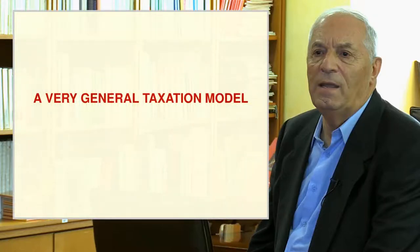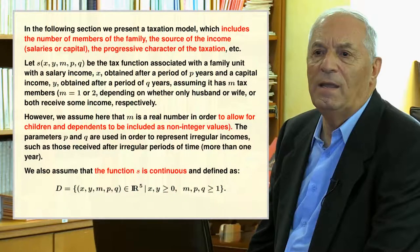Next we present a much more complex tax action model that includes the number of family members b, the source of income (salaries or capital), and the progressive character of the tax action. Let s be the tax function for a family unit with salary income x over p years and capital income y over q years, assuming m tax members, where m equals 1 or 2 depending on whether one or both spouses receive income. We allow m to be a real number to include children and dependents as non-integral values. Parameters p and q represent irregular incomes received after more than one year. The function s is continuous and defined as indicated at the bottom of the slide.